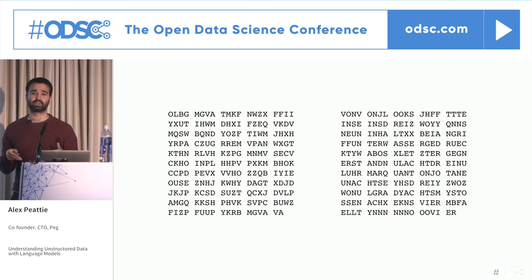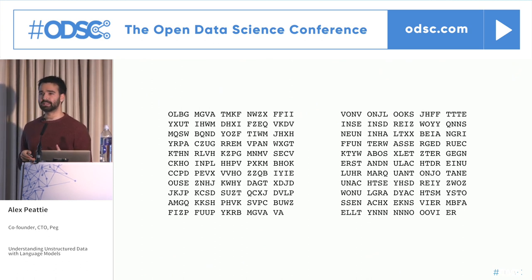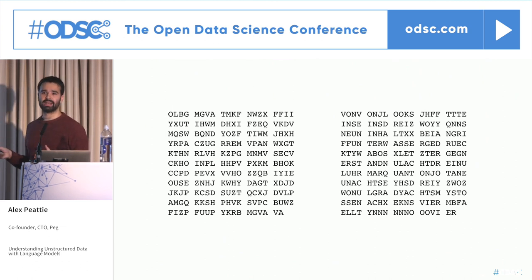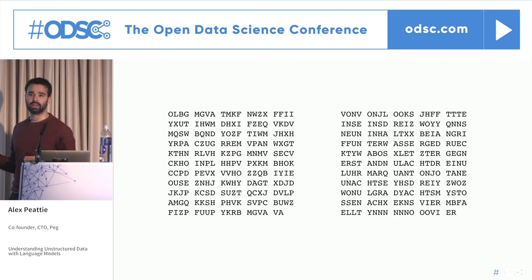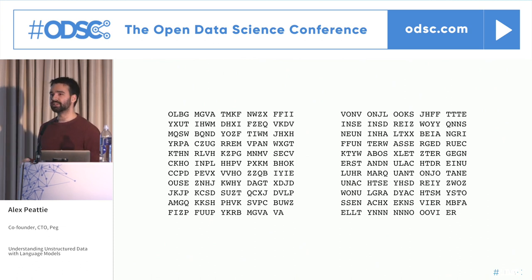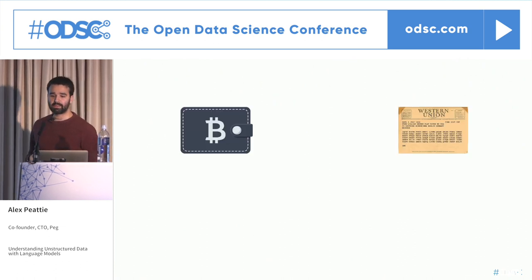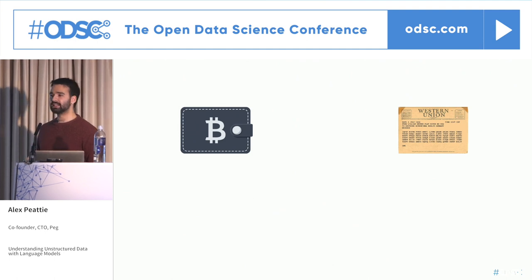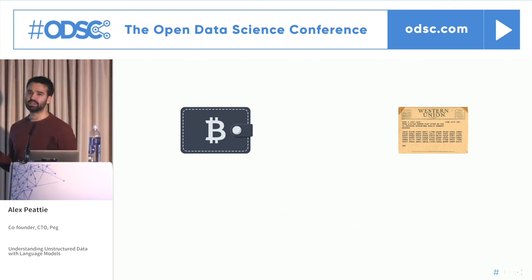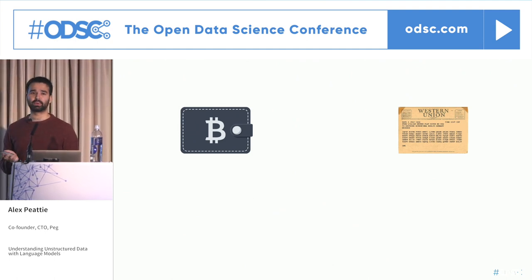Turing and his team were trying to do this on the very earliest computers. If you try to write a normal program — some complex if-statement to implement this test and catch all the edge cases — it just becomes incredibly difficult. So Turing had to come up with a really novel approach. I want to underline some of these points with a quick comparison.